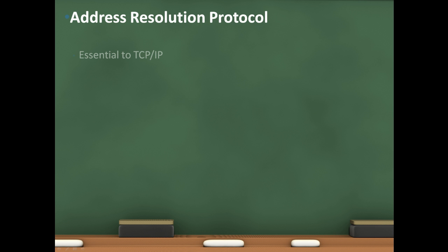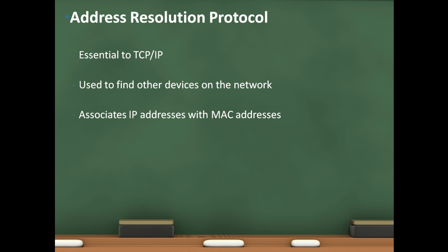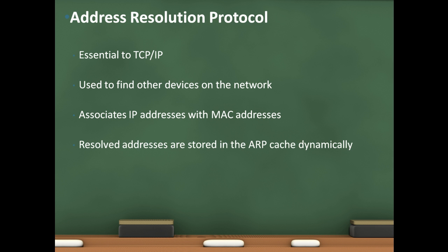ARP stands for Address Resolution Protocol and is essential to TCP/IP. It's mainly used to communicate with other devices on your network. It does this by matching up IP addresses with the corresponding MAC addresses. After a match has been made, it is dynamically stored in the ARP table or ARP Cache.